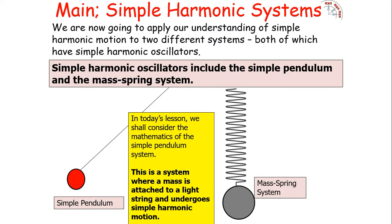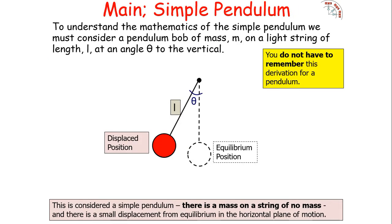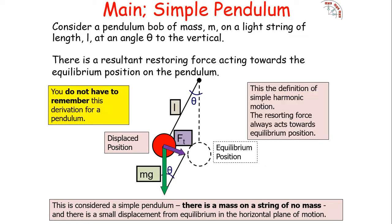We're going to look at a system where a mass is attached to a light string and undergoes simple harmonic motion. To understand the mathematics, we consider a pendulum bob of mass m on a light string of length L at an angle of theta to the vertical. You don't have to remember this derivation, but it's interesting to understand. The pendulum has a small displacement from equilibrium in the horizontal plane of motion.